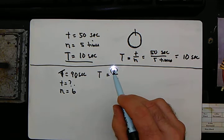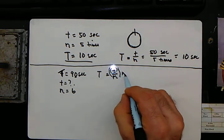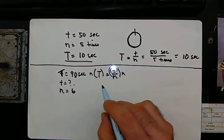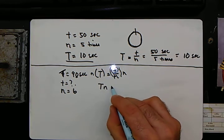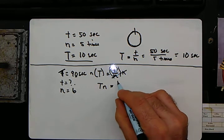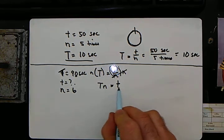We're solving for little t. So I would just multiply both sides by n. So there's a new formula for you.